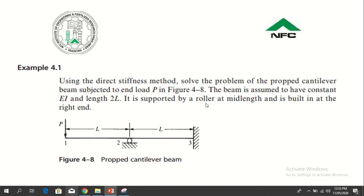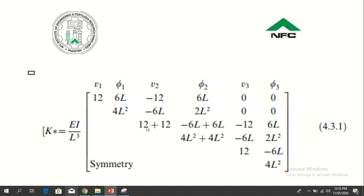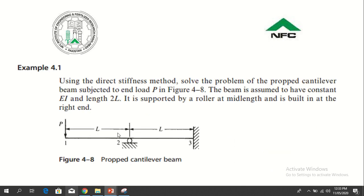It is supported by a roller at mid-length and is built in at the right end. In this diagram you can see it has 3 nodes and 2 elements. This is element 1 and this is element 2. For element 1 nodes are 1 and 2, for element 2 nodes are 2 and 3.